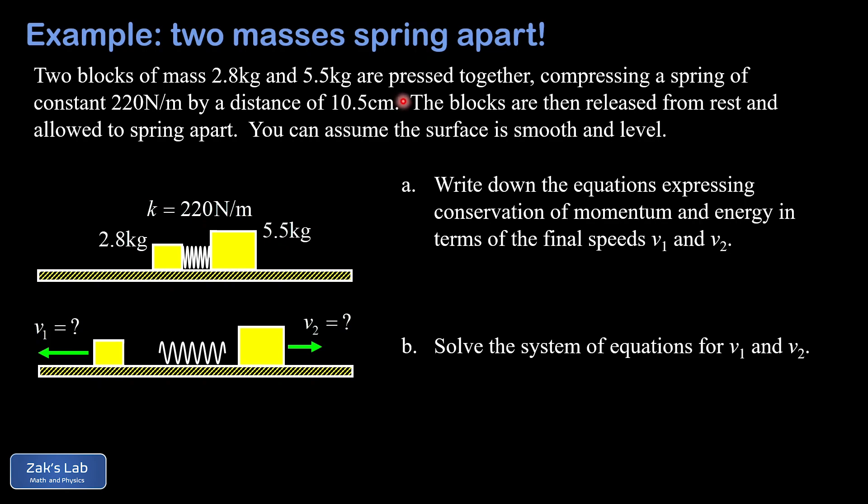The one piece of information that's not in the diagram is this 10.5 centimeter initial compression distance of our 220 newton per meter spring. We have a small block with a mass of 2.8 kilograms and a large block with a mass of 5.5 kilograms, and the spring constant is 220 newtons per meter.